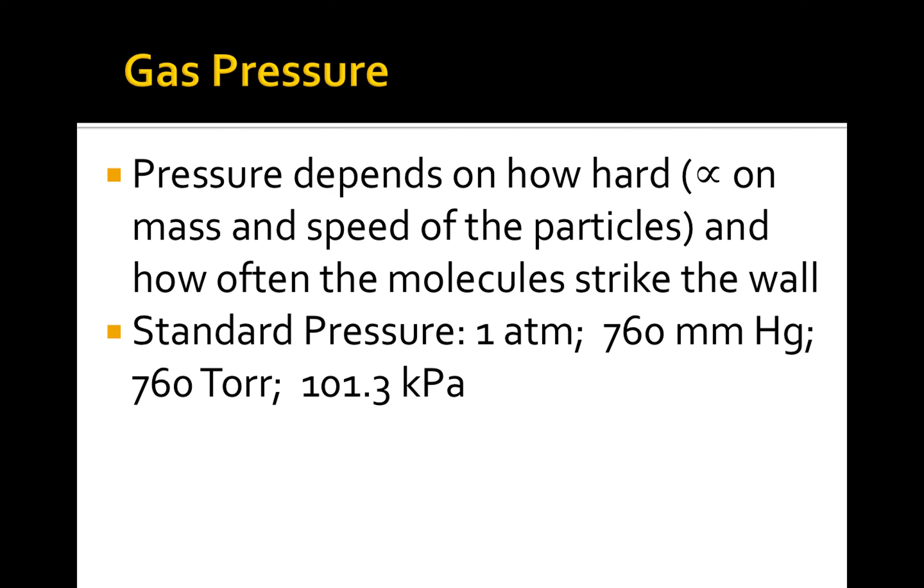There are four different units because, I don't know why, but different scientists use different units. Chemists prefer to use atmospheres, while meteorologists use millimeters of mercury, and physicists tend to use kilopascals.